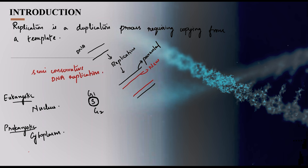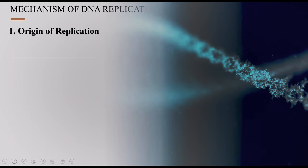You have to understand the names and functions of the molecules involved. The mechanism of DNA replication has seven steps. The first step is the origin of replication — there should be a particular spot to start the replication process, and that is called the origin of replication, also abbreviated as ORI.